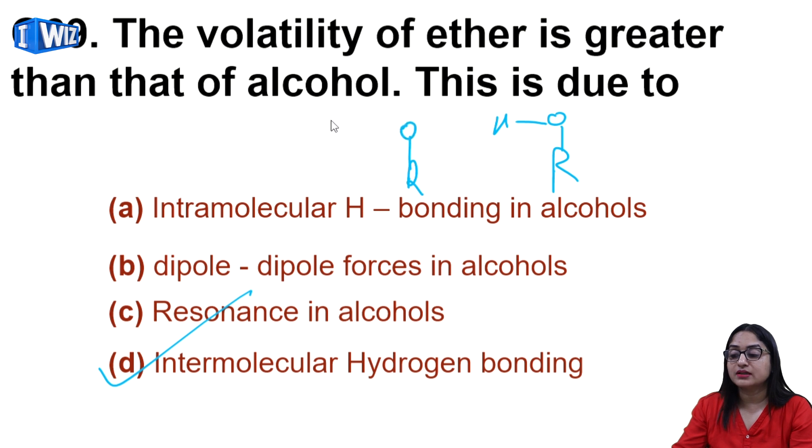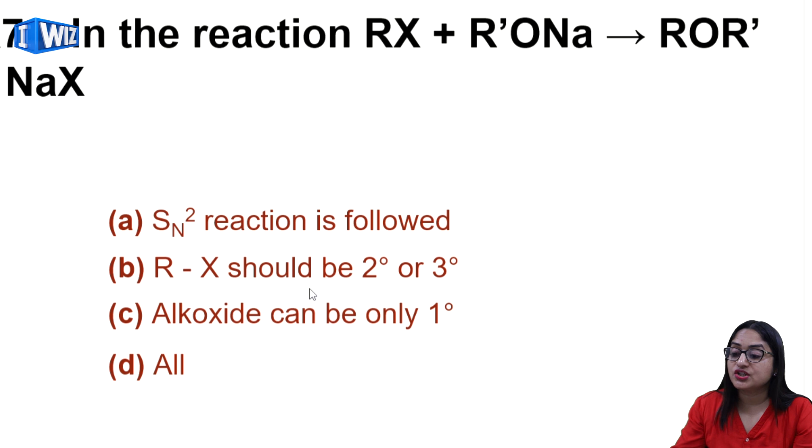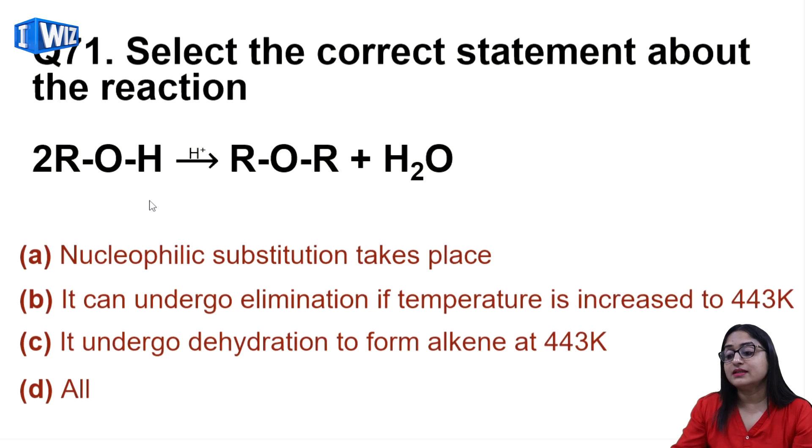Then in the reaction alkyl halide plus sodium alkoxide gives ROR plus NaX, which mechanism is followed? SN2 reaction is followed. Then select the correct statement about the reaction: you have alcohol and you add H-positive to get ether and water. This kind of reaction is nucleophilic substitution, very true. It can undergo elimination if temperature is increased to 443 Kelvin, very true. It can undergo dehydration to form alkene at 443K, yes. All of them are correct. We have to keep temperature low, otherwise these things will happen.